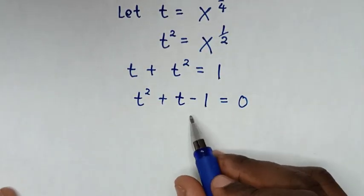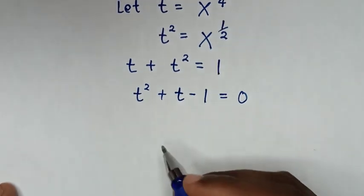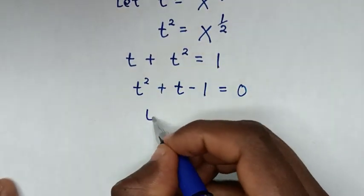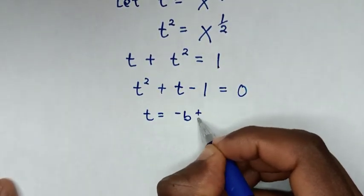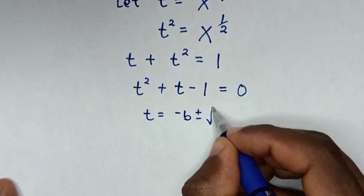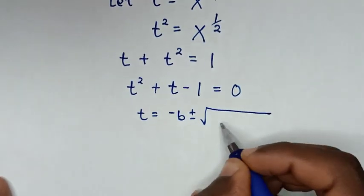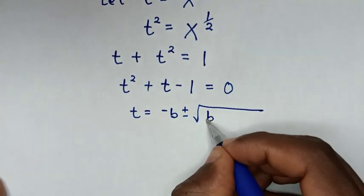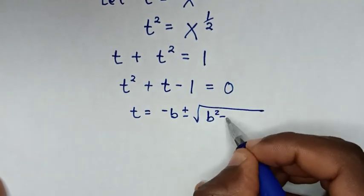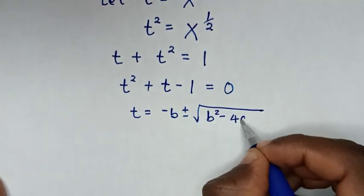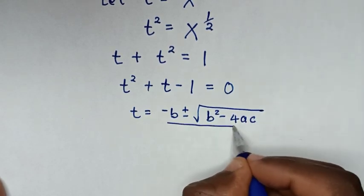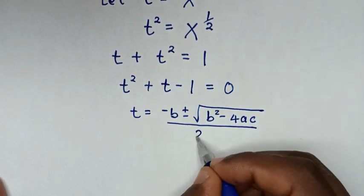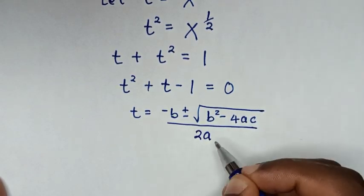The quadratic formula is t equals negative b plus or minus square root of b squared minus 4ac, all over 2a.